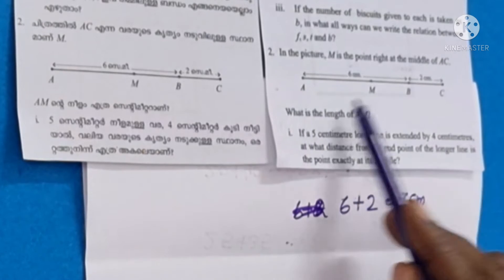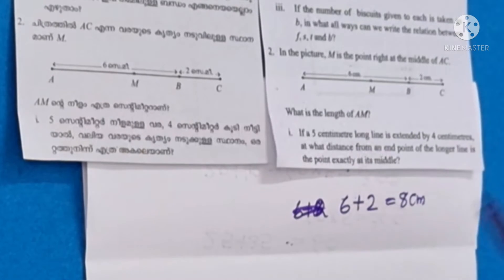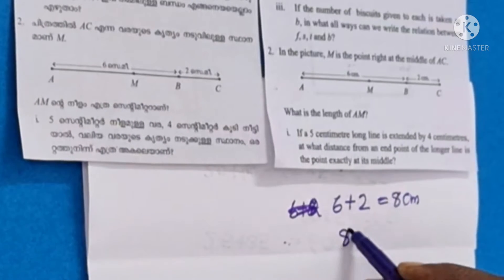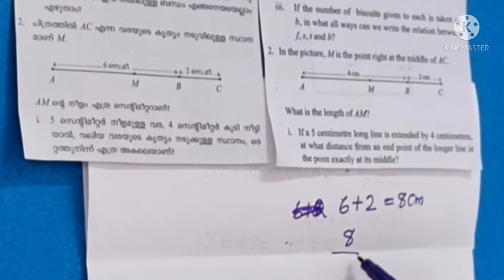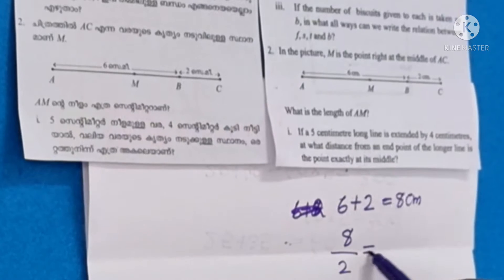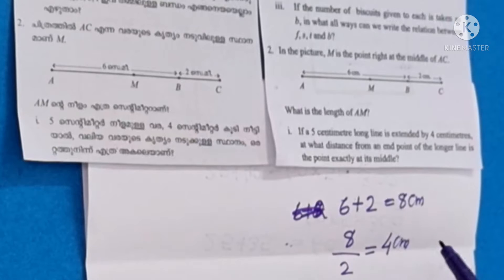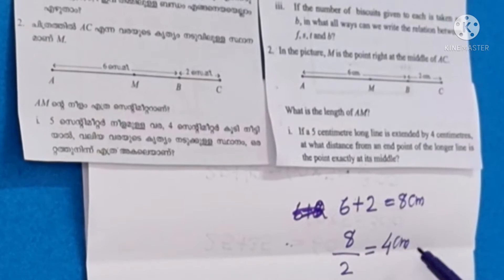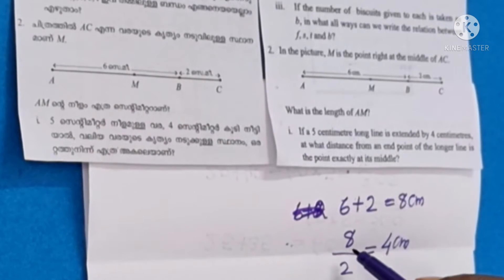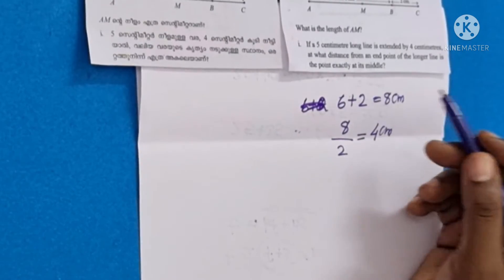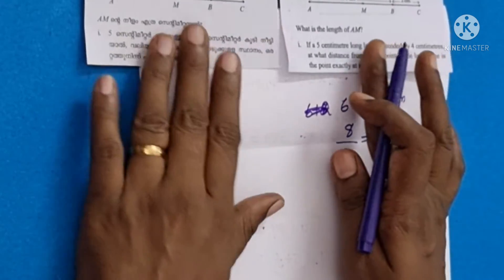The length of AC is 8 cm. Since M is the midpoint, AM is half of AC. The length of AM is equal to 4 centimeters.